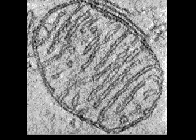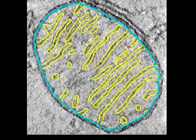To create a three-dimensional model, membranes in an individual slice of the tomogram are traced. In this case, the inner membrane is traced in light blue where it parallels the outer membrane, and traced in yellow where it folds into the cristae that protrude into the mitochondrial interior.